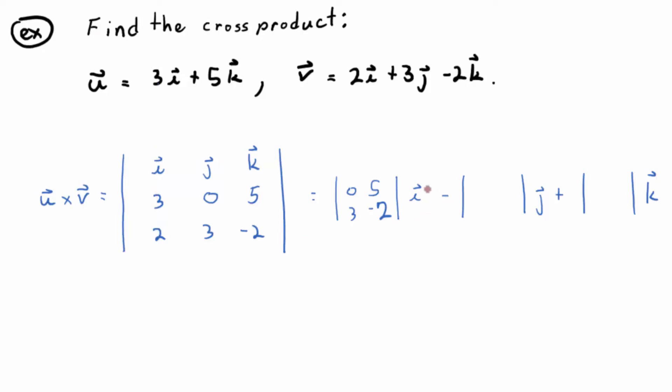All right. And then by definition, that's times i, and then by definition, there's a minus there. What goes in the second set of vertical bars? 3, 5, and 2, negative 2. Everybody see how I got those numbers? And finally, in between the third set? 3, 0, 2, 3. Everybody with me?